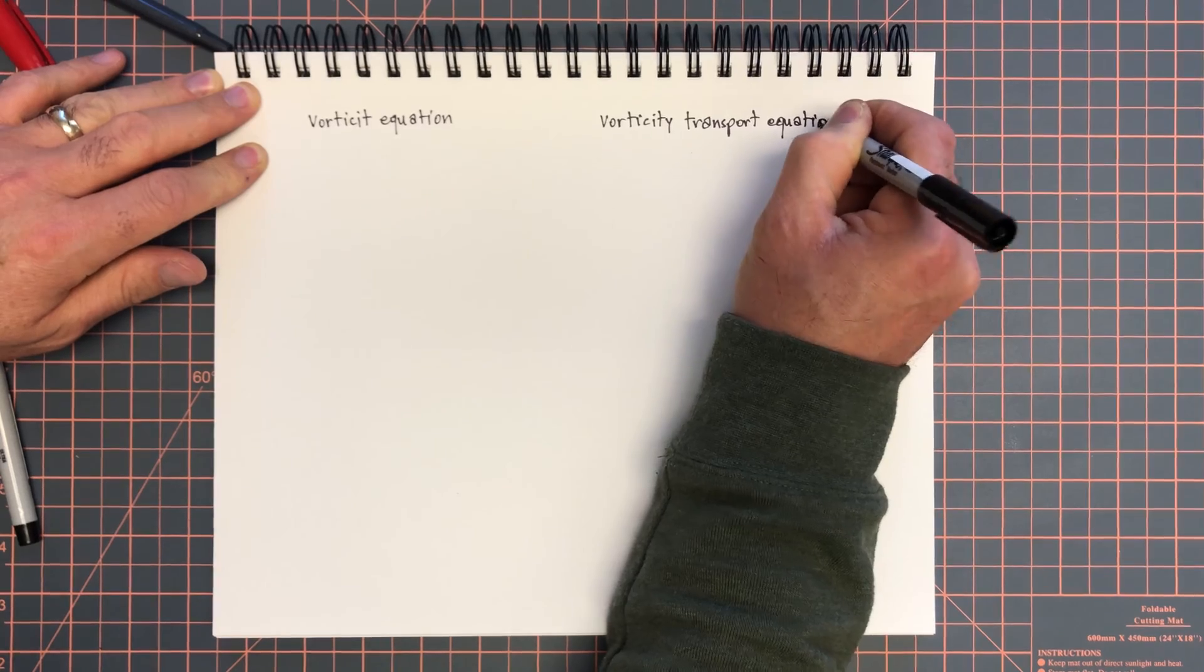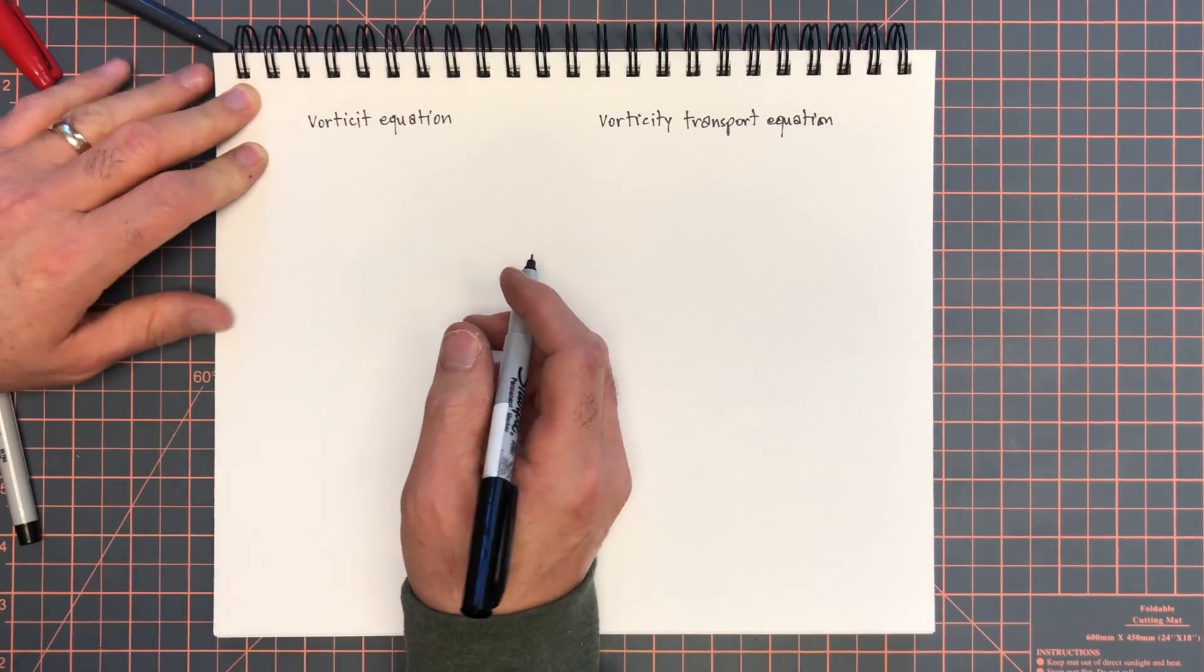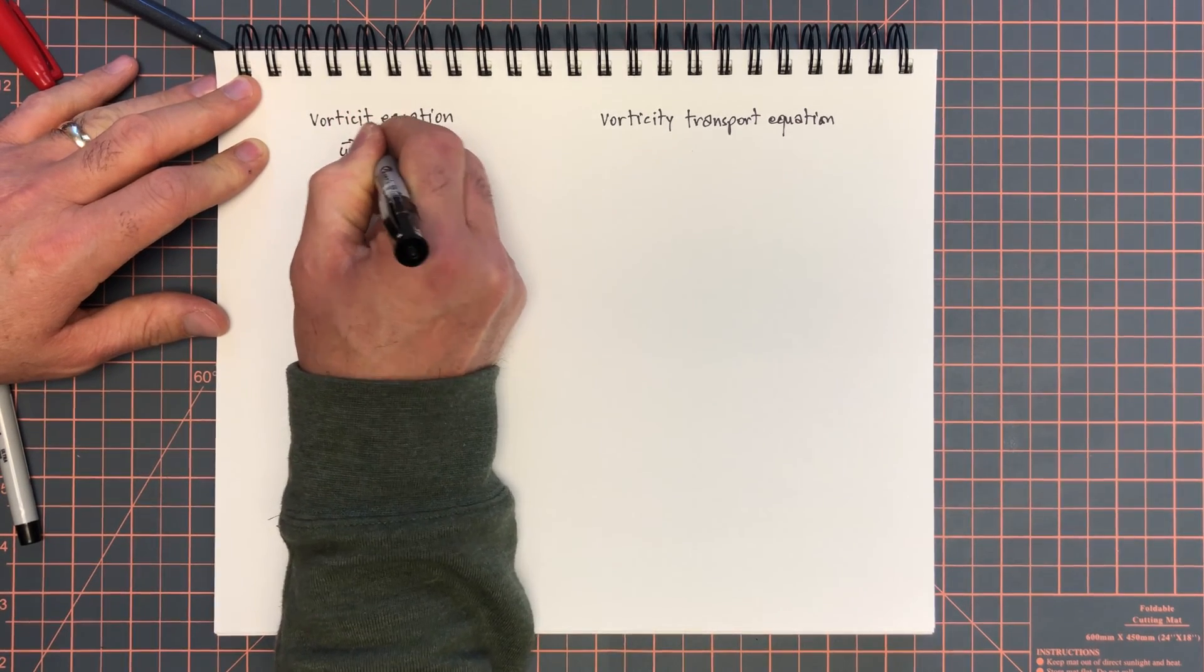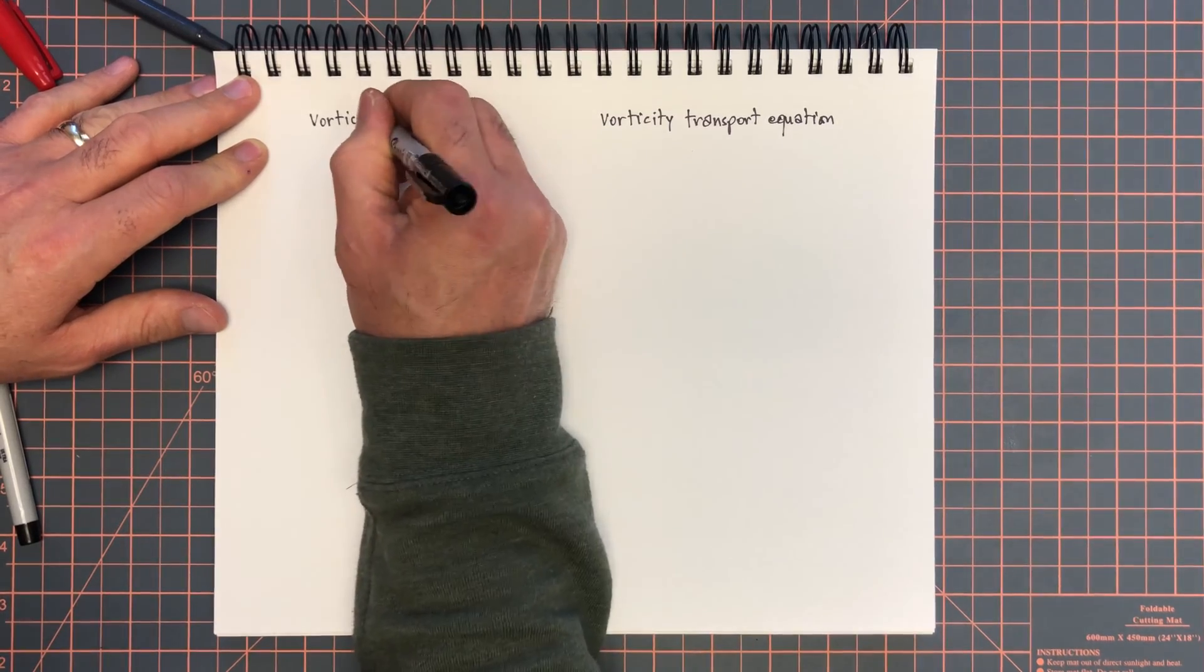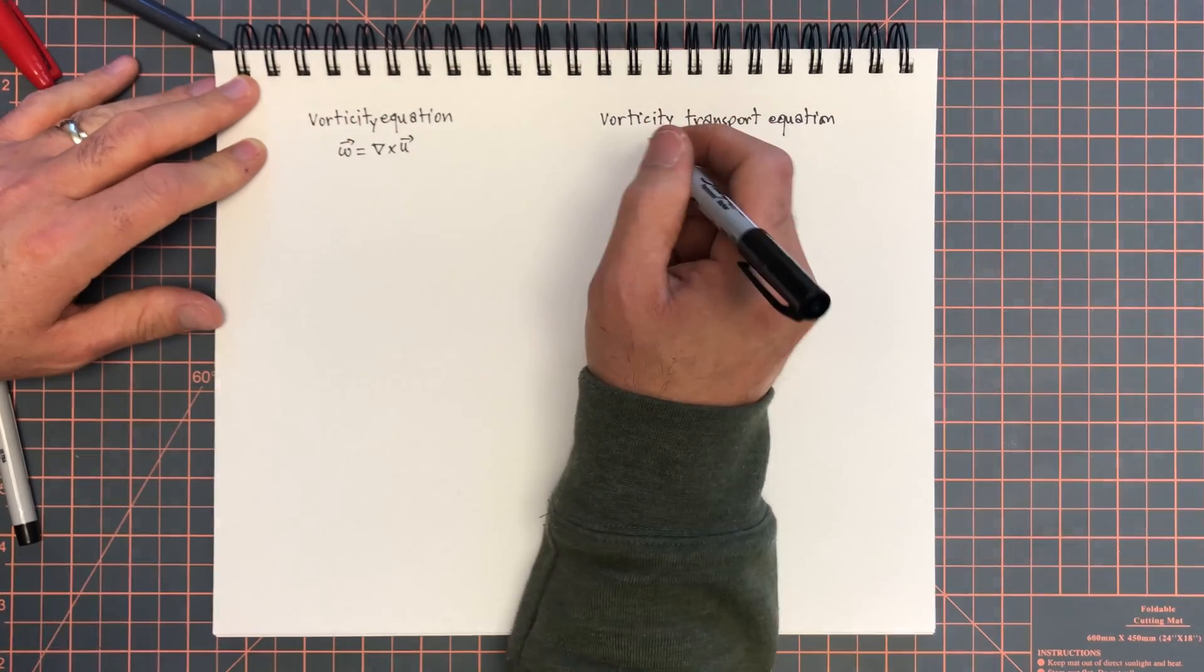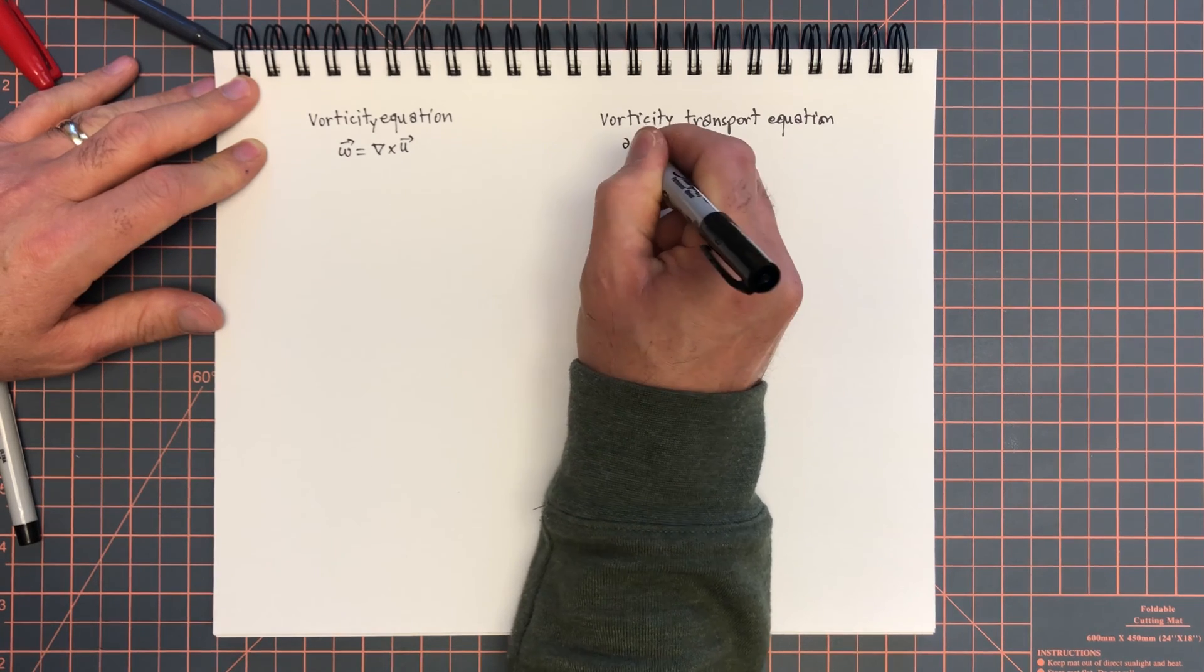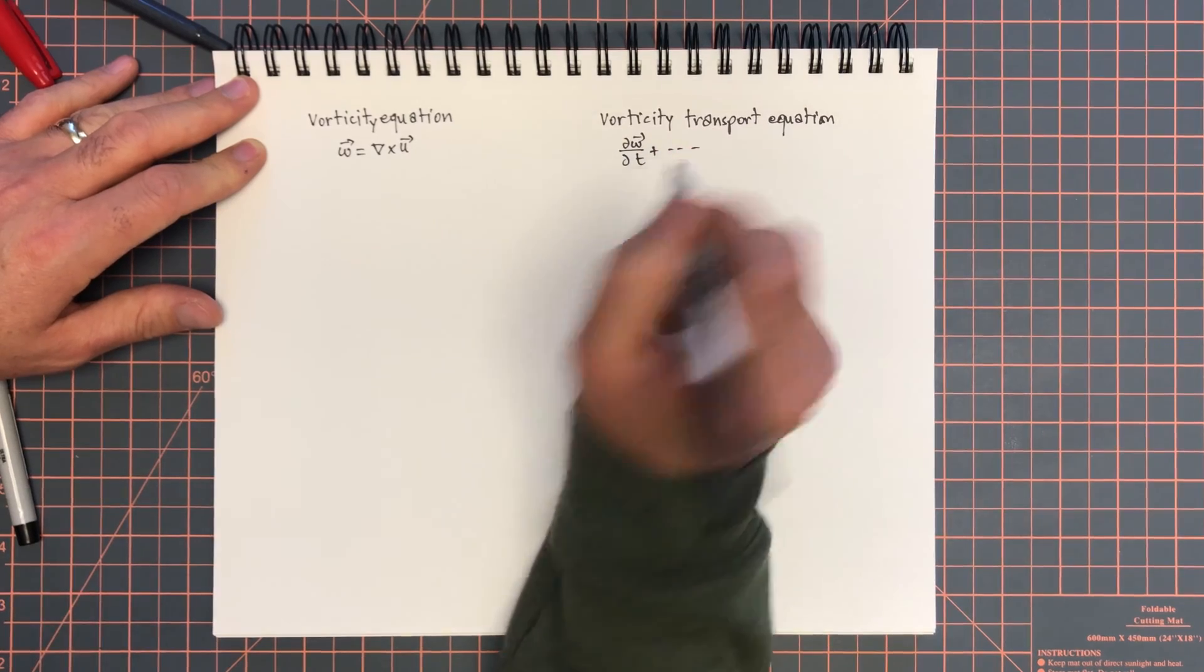So what's the difference? The vorticity equation is simply the definition of vorticity, omega equals curl u. The vorticity transport equation is a legitimate transport equation for omega, d omega by dt plus etc., which we will derive today.